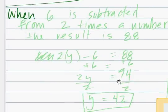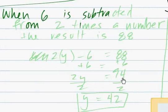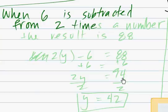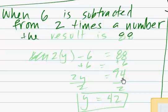When 6 is subtracted from 2 times a number, the result is 88.